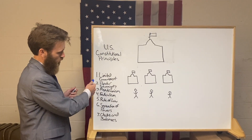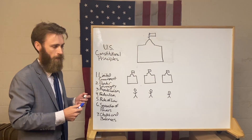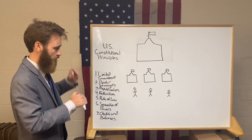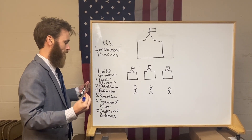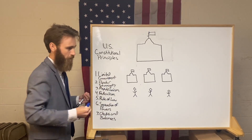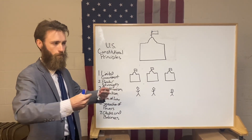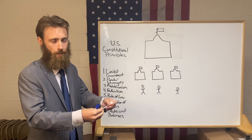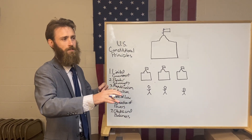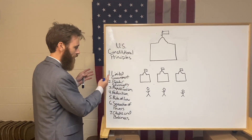The very first principle is limited government. What is limited is the government's power — their authority over the people is a limited power, not unlimited. Everything is on a spectrum from limited to unlimited. A totally limited government would have absolutely no power — that would be anarchy. A totally unlimited government would be total tyranny, totalitarianism.